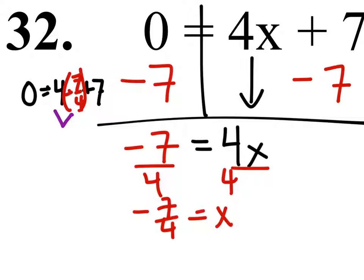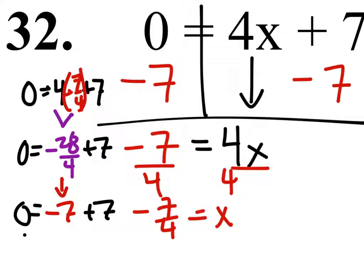4 times negative 7 fourths would be negative 28 fourths. And this is supposed to equal 0, and we'll add the 7. Negative 28 over 4 is negative 7. So plus 7 equals 0. And negative 7 plus 7 does equal 0. That's true.